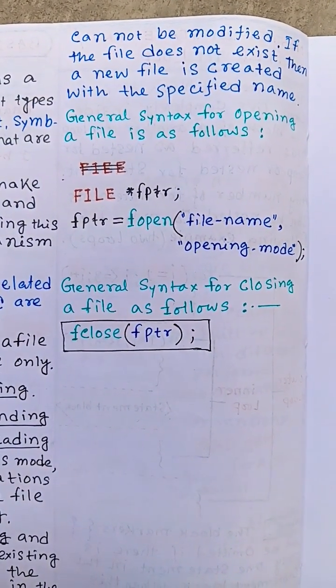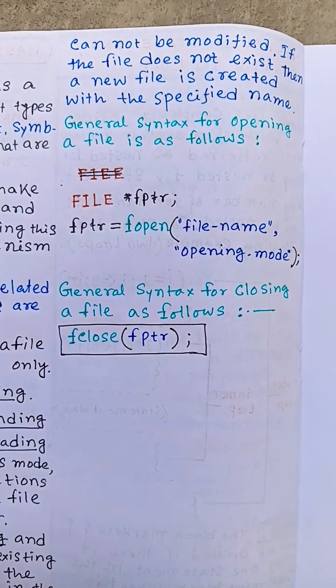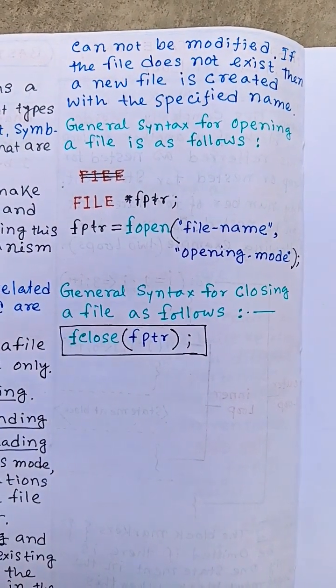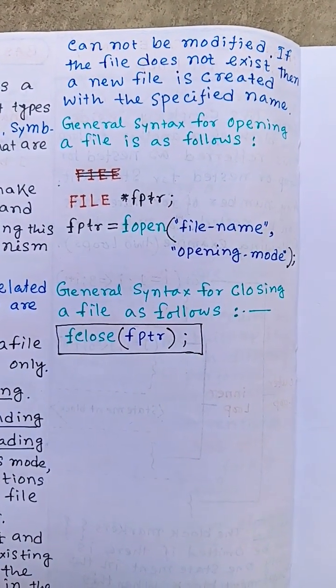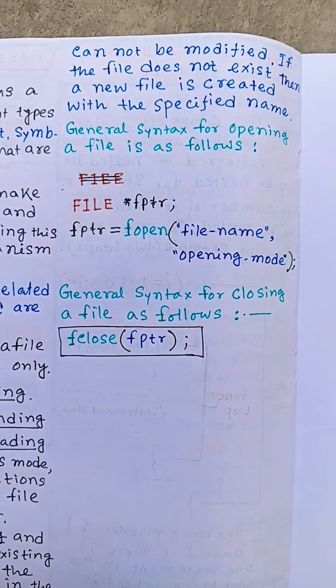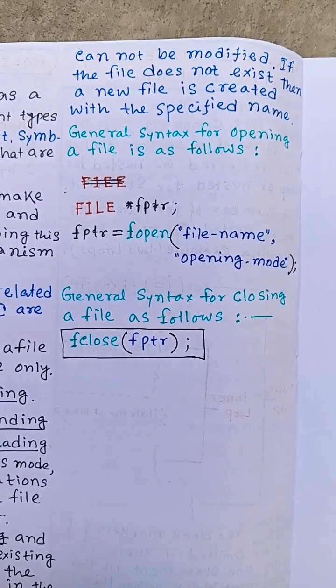General syntax for closing a file is as follows: fclose fptr. fclose is a function that closes the file.